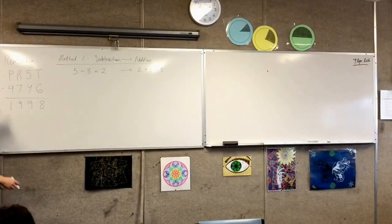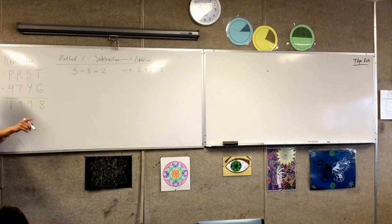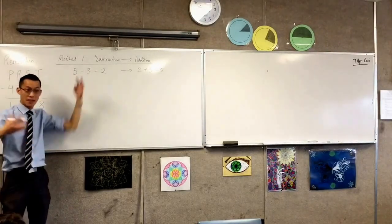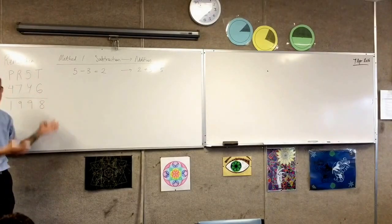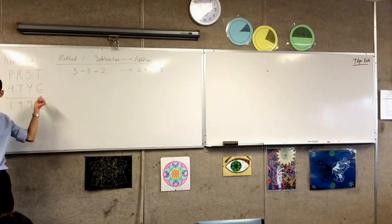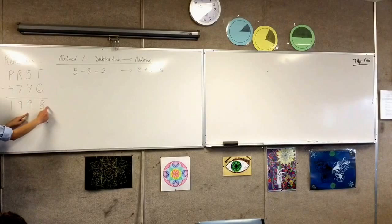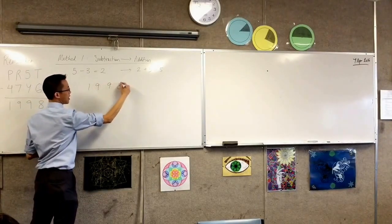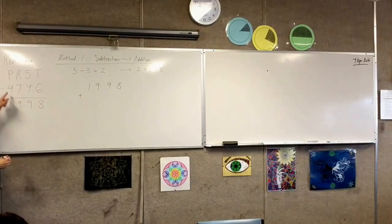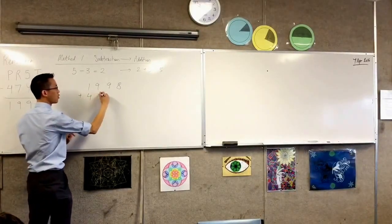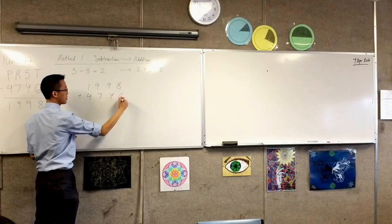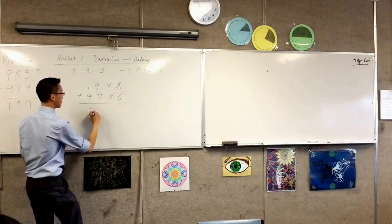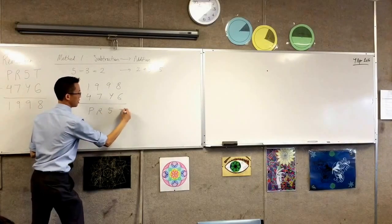Let's rewrite it. So I'm going to write this plus this equals that, okay? 1998 plus 47Y6. And my sum at the end will be PR5T.